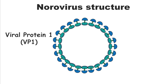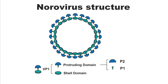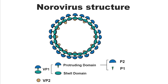The norovirus capsid is made up of 180 units of a single protein known as viral protein 1, or VP1. The capsid structure is divided into two main regions: the shell domain and the protruding domain. The protruding domain is further split into two smaller parts, P1 and P2. P1 is crucial in aiding the virus's entry into host cells, while the P2 subdomain binds to specific carbohydrates found on human cell surfaces. Inside this shell, there's another protein called VP2, which supports the stability and integrity of the virus.